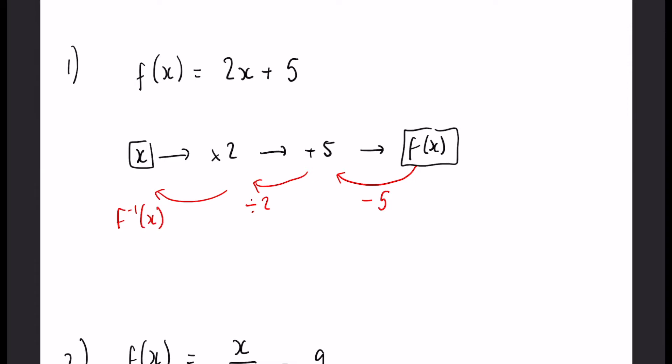So writing this out, we're going to have f to the minus 1 of x equals x minus 5 over 2. Just like that, it is solved.